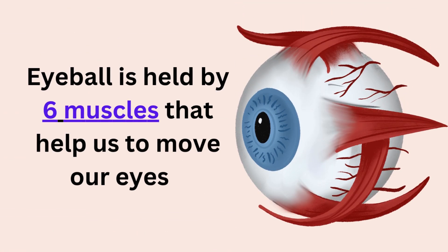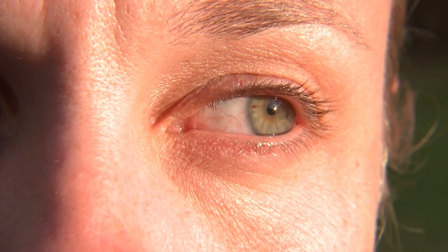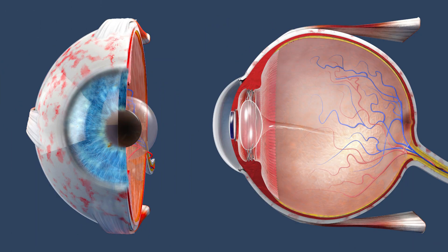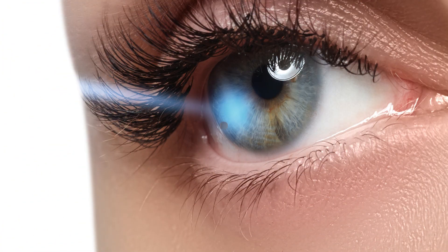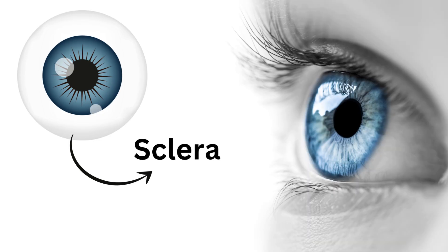The eyeball is held by a set of six muscles in the eye socket that help us to move our eyes right, left, up, and down. The eyeball appears to consist of two parts. The outer front part is the cornea — it is transparent and bulges out a little to allow light to enter the eye. The white part of the eyeball is called the sclera, a tough opaque layer that provides protection.